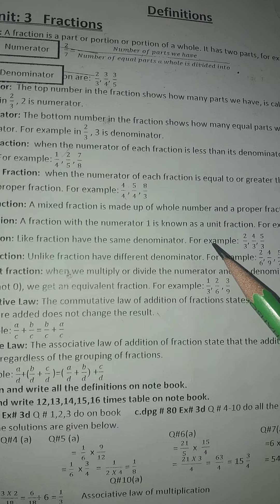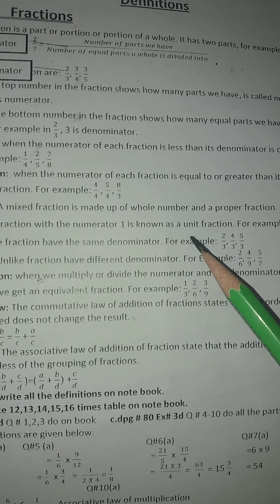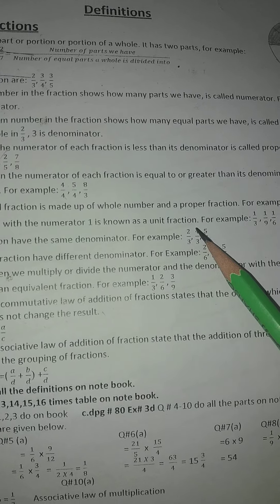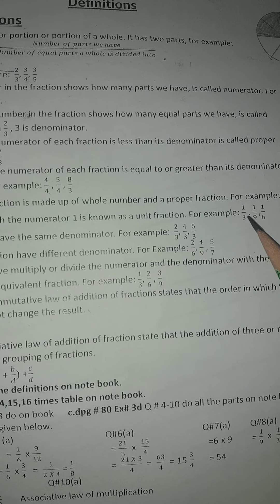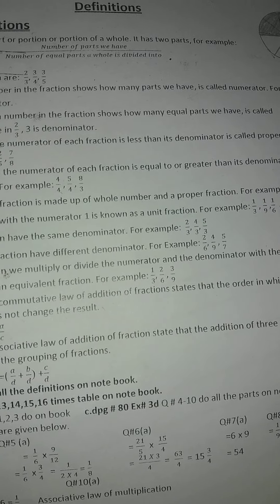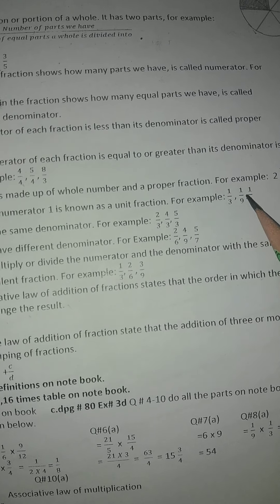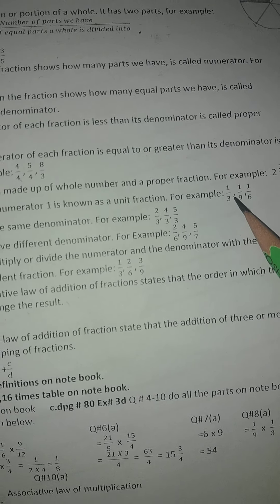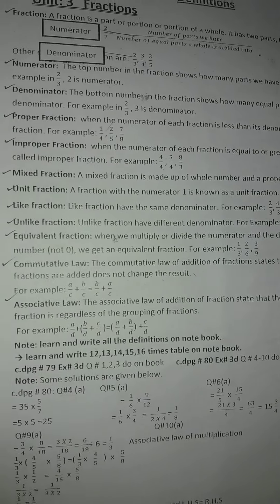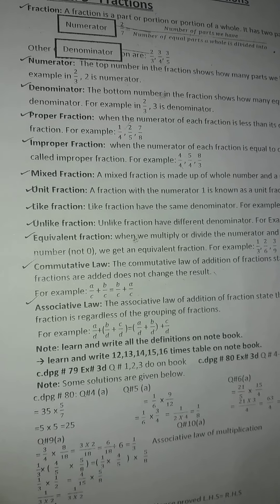Unit fraction: a fraction with a numerator of one is known as a unit fraction. For example, one over three, one over nine, and one over six. In all these fractions the numerator is one — this type of fraction is called a unit fraction.